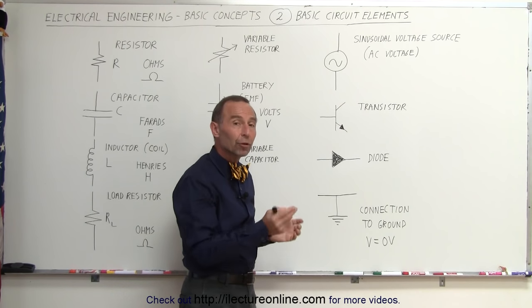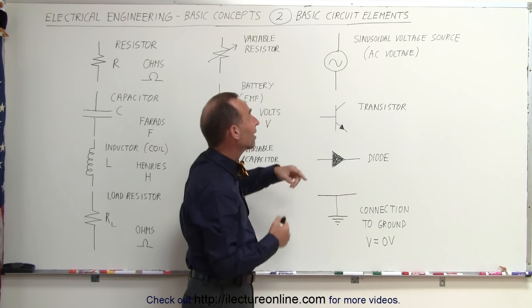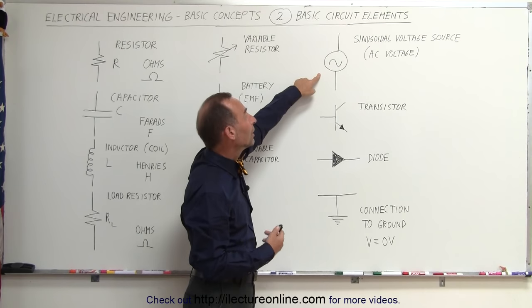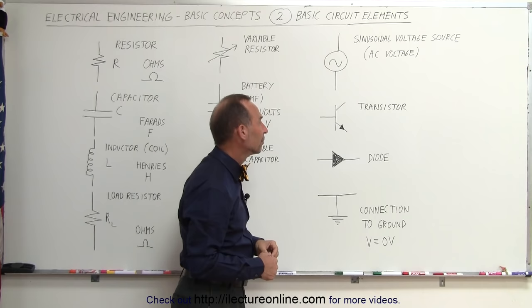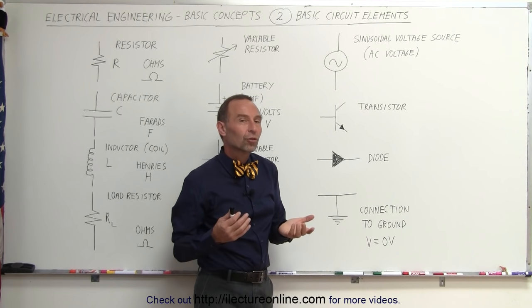Actually, the voltage becomes positive, negative throughout the cycle. It produces what we call AC voltage, and we have this sine wave symbol inside a circle to indicate that.